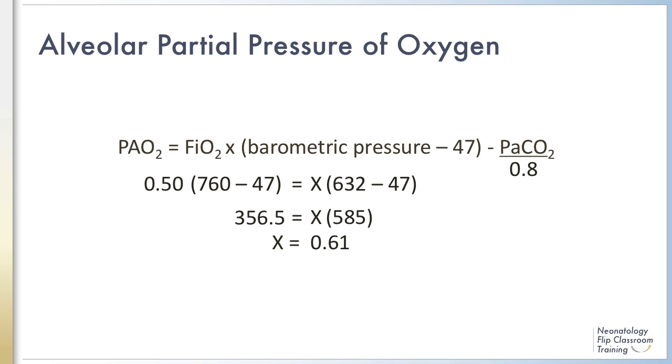So going back to the case I presented at the beginning of the module, the newborn who required a FIO2 of 0.5 at sea level, who is being transported to a much higher altitude. He's starting in Nashville, where the elevation is pretty close to sea level, so the atmospheric pressure is 760 millimeters of mercury.